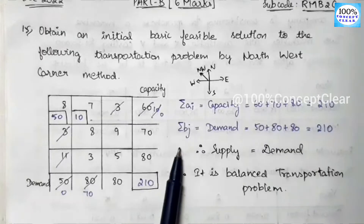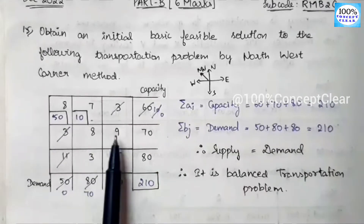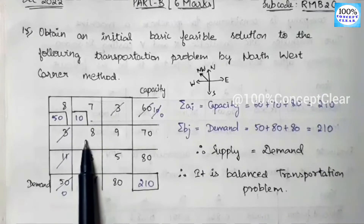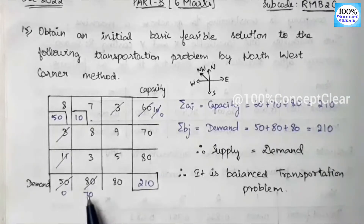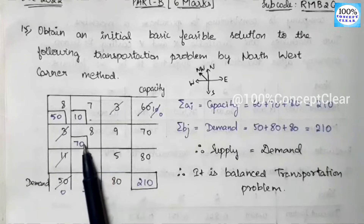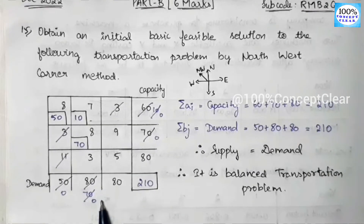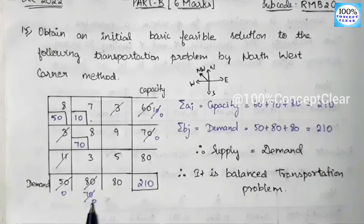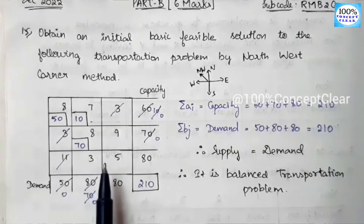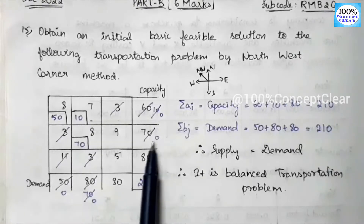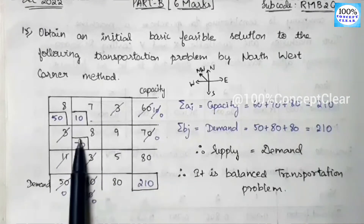For the third allocation, the remaining values are 8, 9, 3, 5, and the north-west corner is the cell with cost 8. Supply is 70 and demand is 70 — both are equal, so we allocate 70. We cancel both supply and demand. Since supply and demand are both 0, we cancel the entire second row and second column. Three allocations are now complete.